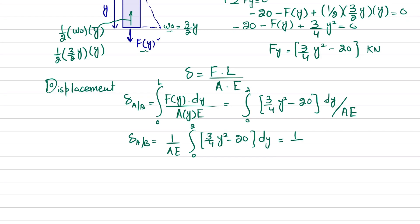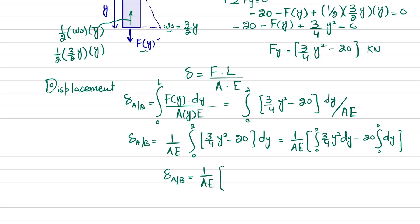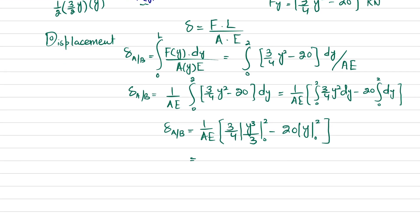The displacement of A with respect to B equals 1/(A·E) times the integral from 0 to 2 of [(3/4)·y² minus 20]·dy. Evaluating: the integral of (3/4)·y² is (3/4)·(y³/3) and the integral of 20 is 20y, both evaluated from 0 to 2. The 3 cancels, leaving y³/4, evaluated from 0 to 2, minus 20y from 0 to 2.